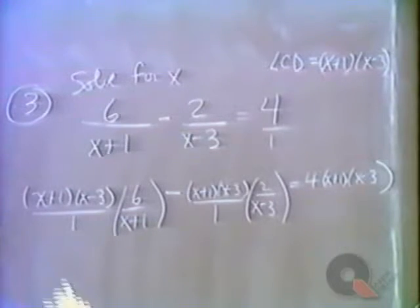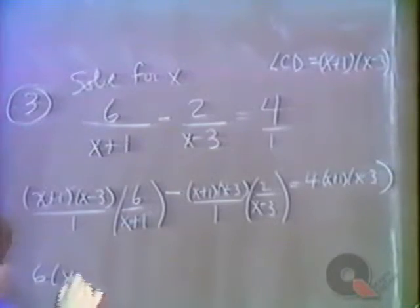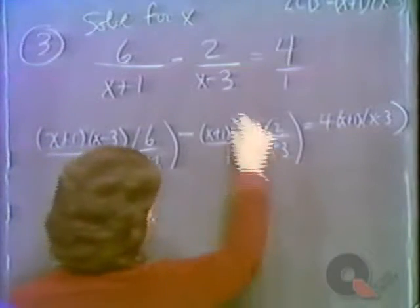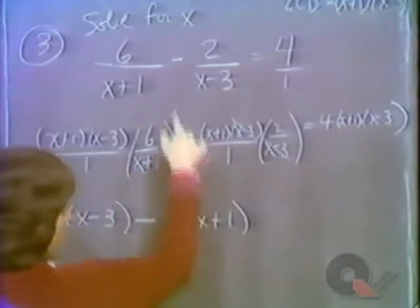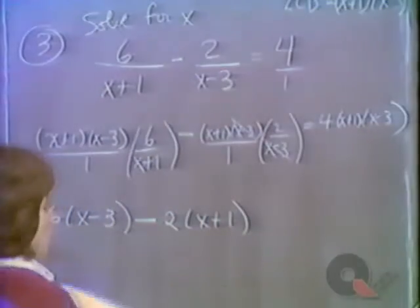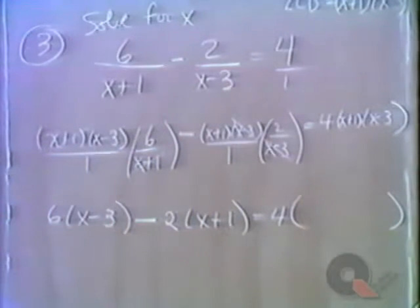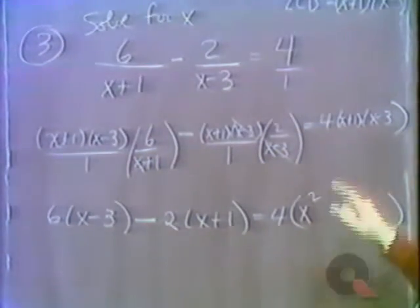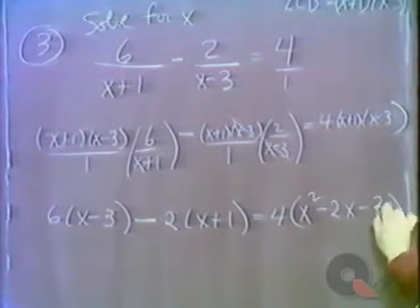After cancellation, the first term leaves 6 times x minus 3, and the second leaves minus 2 times x plus 1. On the right side, we multiply 4 times x plus 1 times x minus 3. Using FOIL: x squared, outer is minus 3x, inner is plus x giving minus 2x, and last is minus 3. So the right side is 4 times the quantity x squared minus 2x minus 3.